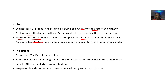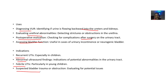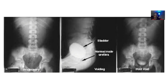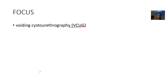Indications for VCUG include recurrent urinary tract infections, abnormal ultrasound findings, febrile urinary tract infections, and suspected bladder trauma or obstructions. This concludes the overview of voiding cystourethrography.